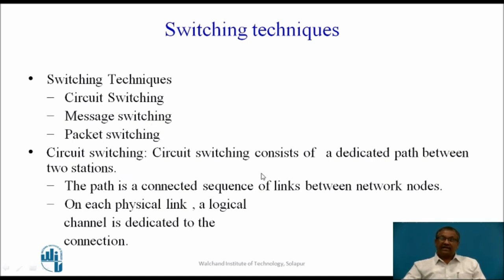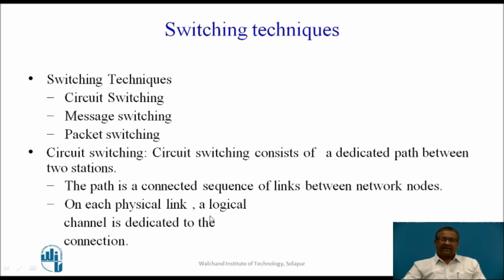Circuit switching consists of a dedicated path between two stations. That means a link is established between the source station and destination station in a circuit switch network before actual transfer of data. These network nodes are connected in such a way that it forms a path between source and destination. Each physical line can have many logical channels, and a dedicated logical channel is associated with a particular communication.